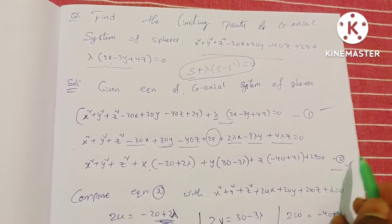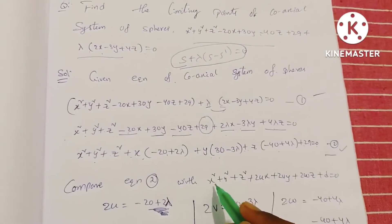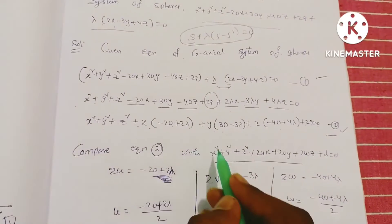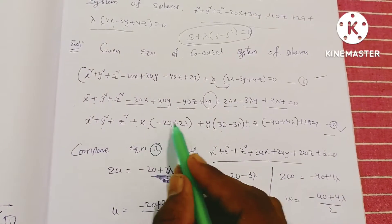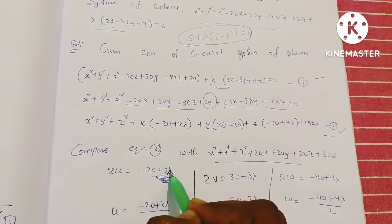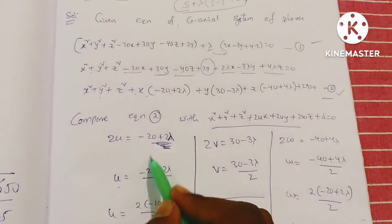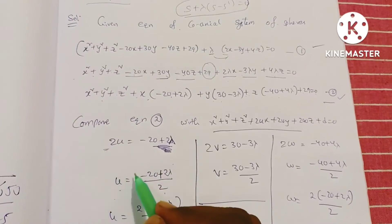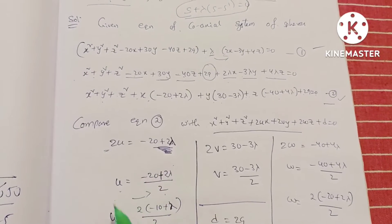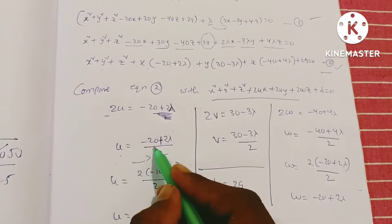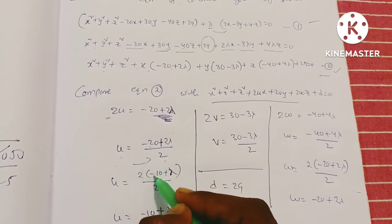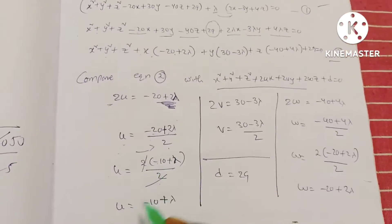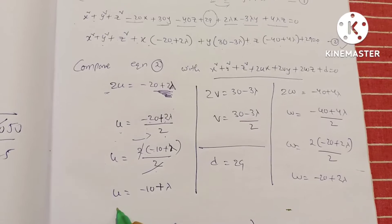Comparing to the general equation of a sphere, 2U = −20 + 2λ, so U = (−20 + 2λ)/2. Simplifying: U = −10 + λ.